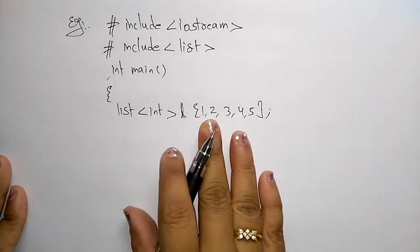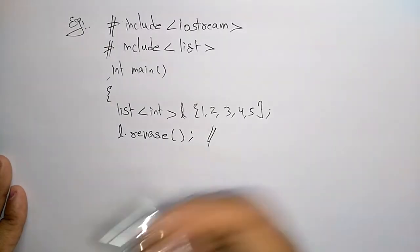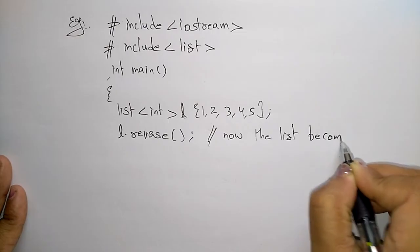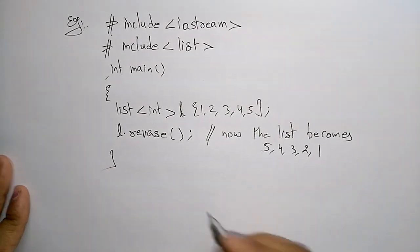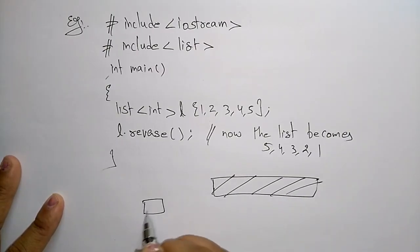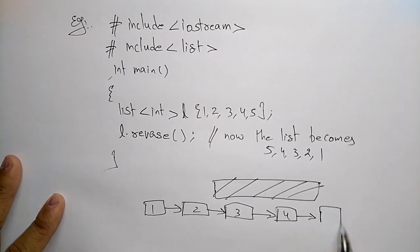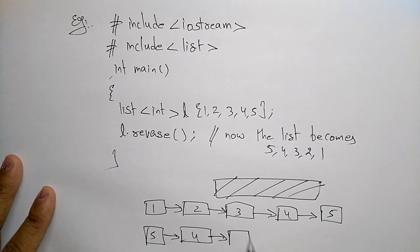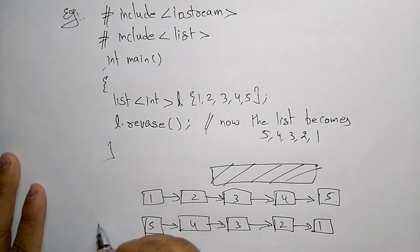To reverse the elements, simply call l.reverse(). This reverses all elements in the list. The list, which previously contained 1, 2, 3, 4, 5, now becomes 5, 4, 3, 2, 1.